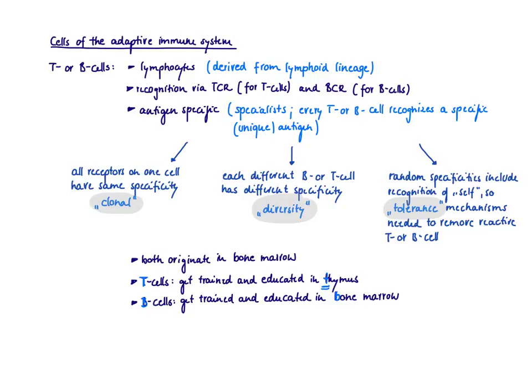So how do they see stuff? They recognize stuff via the so-called T cell receptor on the T cells, TCR, and B cell receptor on the B cells, BCR. So these receptors are the molecules on the surface of a T or B cell that function as the eye of the cell. Without these receptors, T and B cells would be flying blind with no sense what's going on.